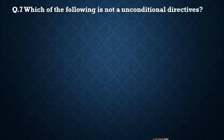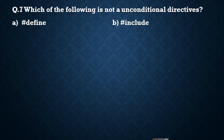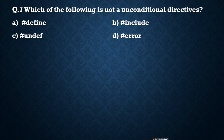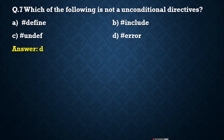Next question: Which of the following is NOT an unconditional directive? Options are: A) #define, B) #include, C) #undef, and D) #error. The unconditional directives are only #define, #include, and #undef. So the correct answer is D, #error.